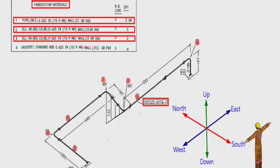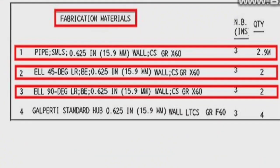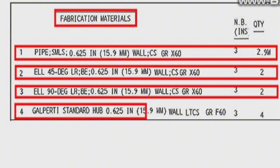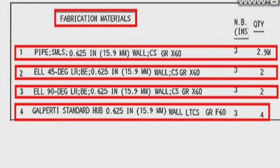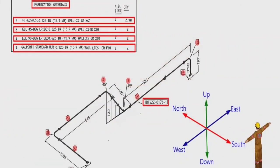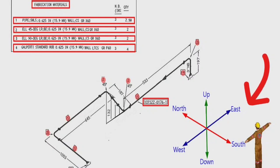Detail number 4 was used in two places in this pipe isometric: Calperdi standard hub flange, wall thickness is 0.625 inches or 15.9 mm, low temperature carbon steel material, grade is X60. We learned the materials used on this pipe drawing. Every pipe drawing has such a sketch — this indicates the directions. By studying these directions, we can easily read any pipe isometric.